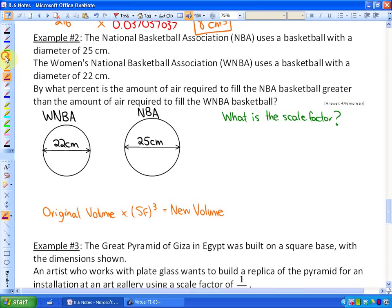what percent greater of a volume is the NBA basketball than the WNBA basketball? So at this particular moment, we do not know the volume of each one, but we know the relative diameters, which means we could actually find the scale factor. Because we know if we know the scale factor, we can get the relative volumes. So the scale factor here, if I'm going from the WNBA to the NBA basketball, because we want to know how much greater it is, would your scale factor be 22 over 25 or 25 over 22?